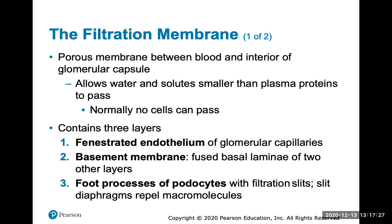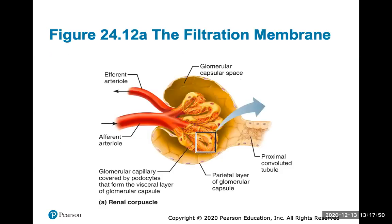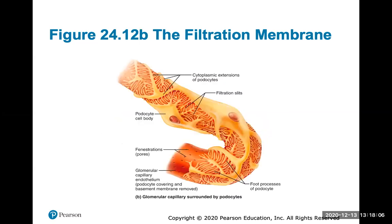There is a very porous membrane between the blood and the interior of the glomerular capsule that allows water and solutes to pass through, but no plasma proteins and no cells. It contains three layers: fenestrated endothelium (with holes), the basement membrane which fuses the two layers together, and foot processes of the podocytes with filtration slits or spaces between them. Here is a look at the filtration membrane showing the capillaries in the glomerulus with podocytes whose feet have spaces that form the slits for filtrate to pass through.